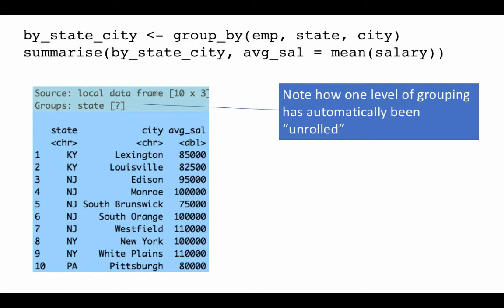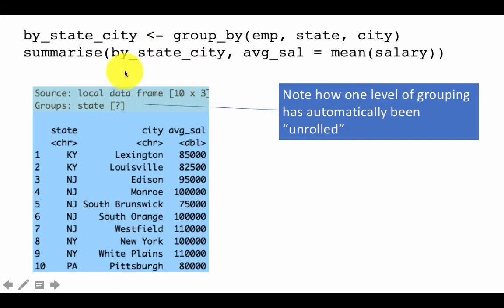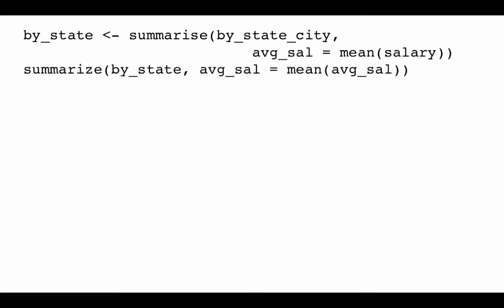We can store the result of the first summarization and then perform further summarization on it. Here I repeat the earlier command — summarize by_state_city with average_sal = mean(salary) — and store the result in a variable called by_state. Because the summarize automatically unwound the city grouping, by_state is now grouped only by state.